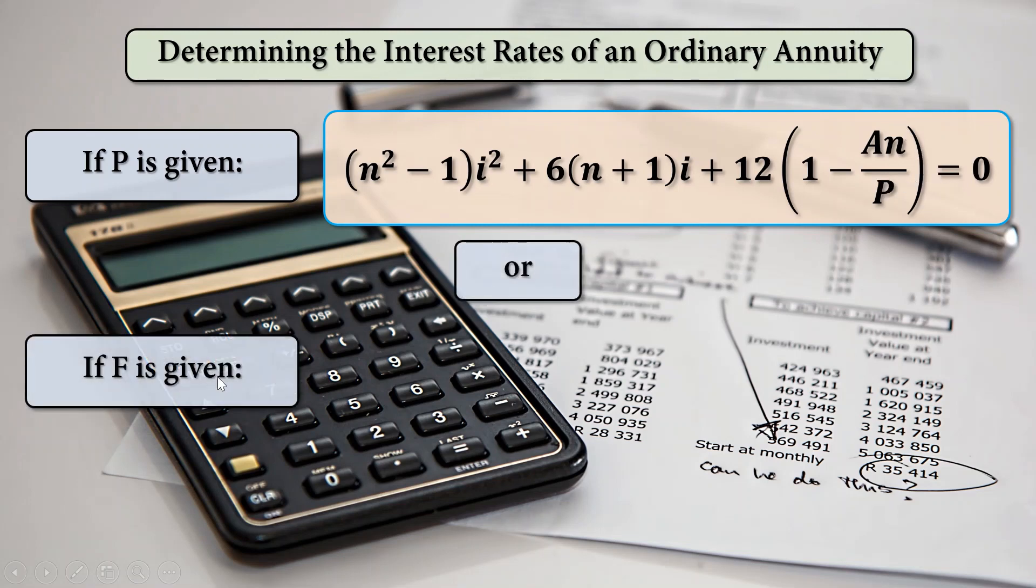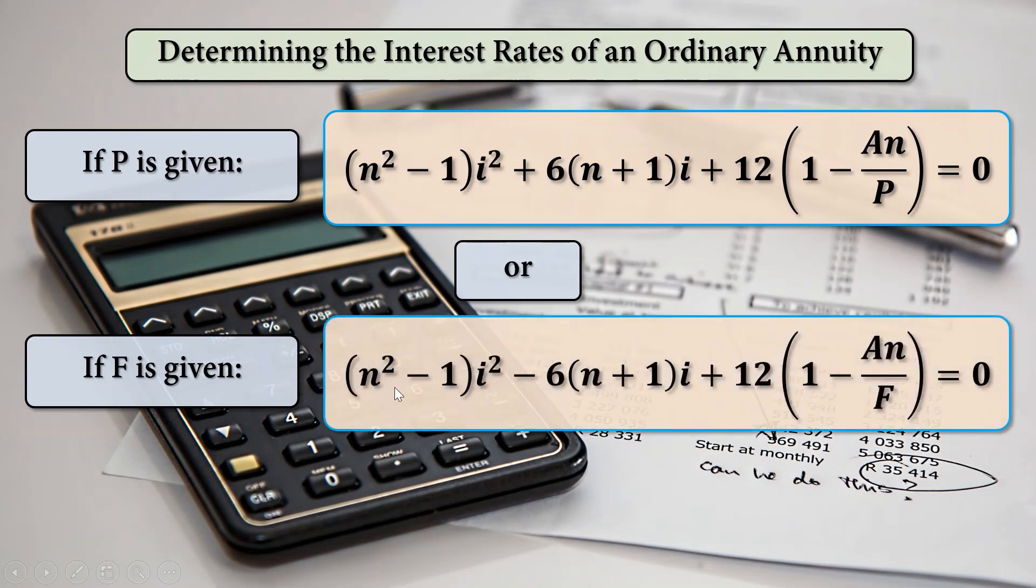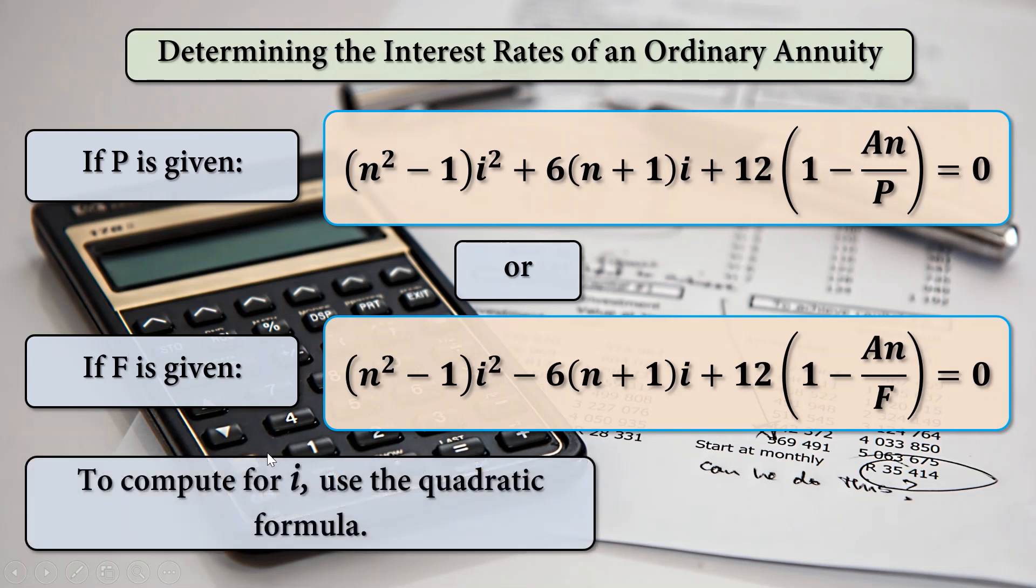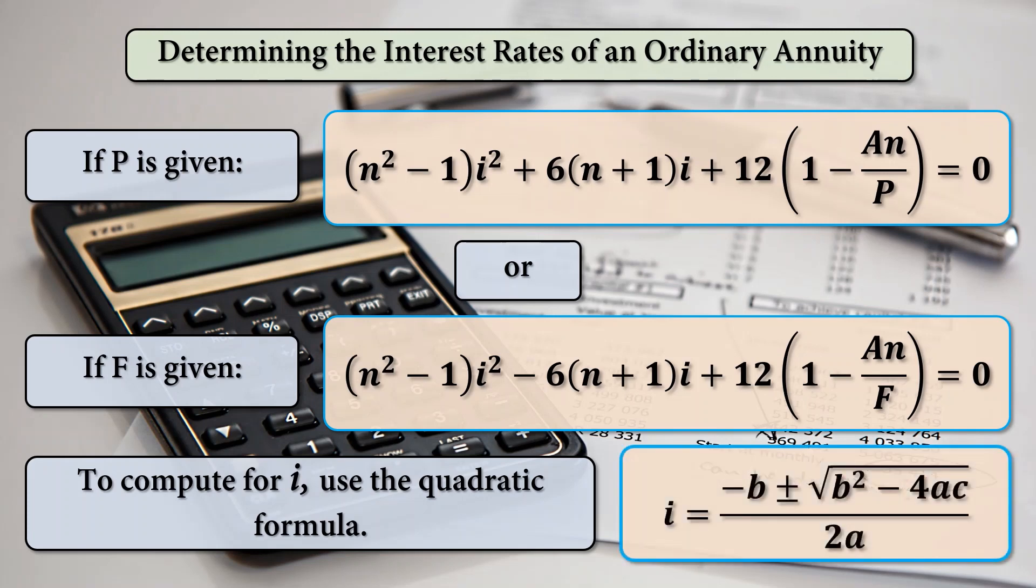Or, if F is given, we are going to use this one, almost alike with the previous formula, but our second operation is minus and our denominator here is F. And so, after solving for this equation, we are going to compute for i using the quadratic formula, which is i equals negative b plus minus the square root of b squared minus 4ac all over 2a.